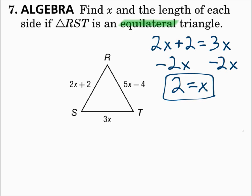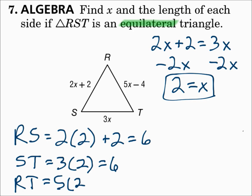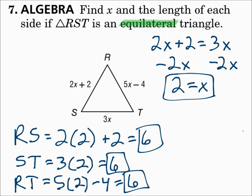Then find the length of each side by substituting 2 in. For RS, which is 2x + 2, that's 2(2) + 2 = 6. For ST, it's 3x = 3(2) = 6. For RT, 5x − 4 = 5(2) − 4 = 6. They should all be the same because it's equilateral — a good way to check your work. If you substituted in and they were all different, you knew you made a mistake.